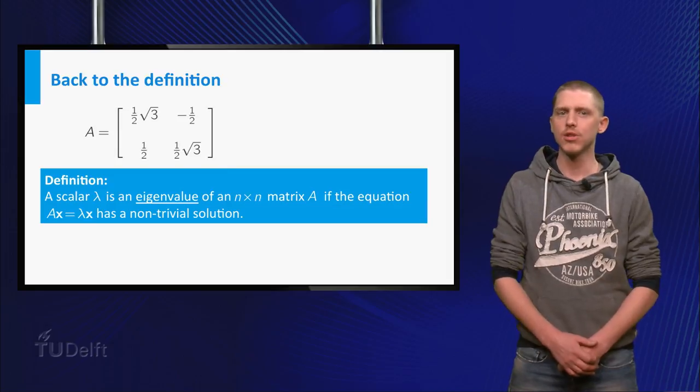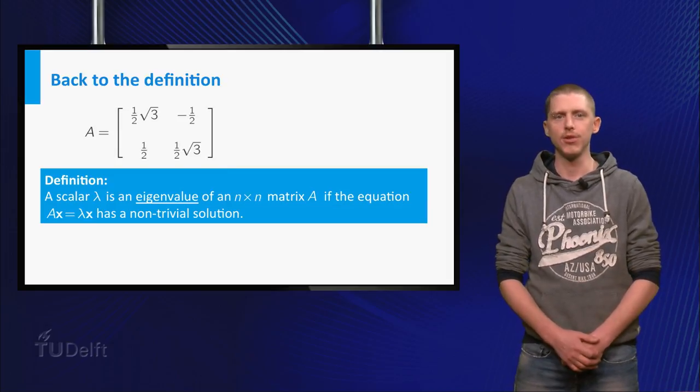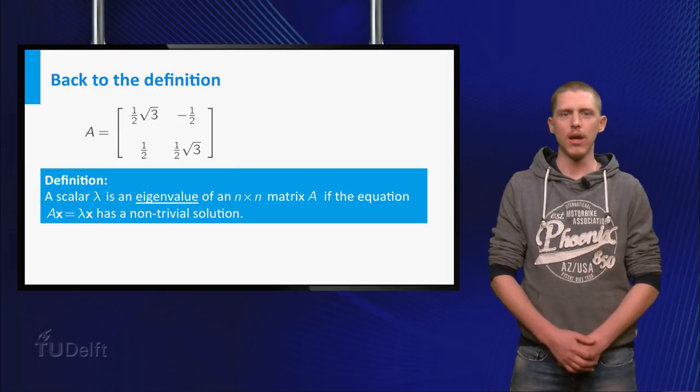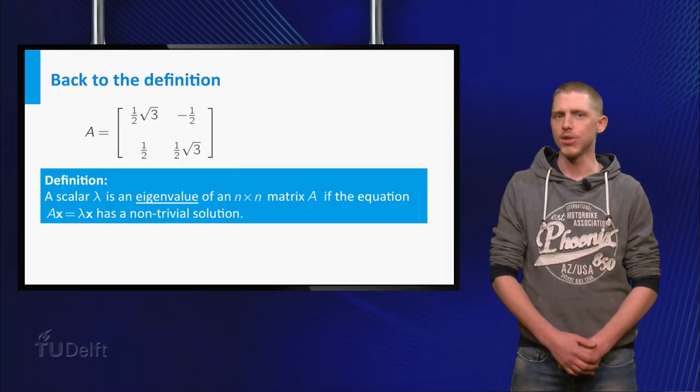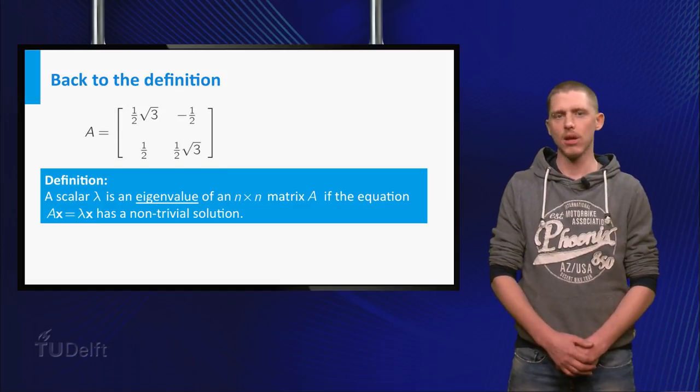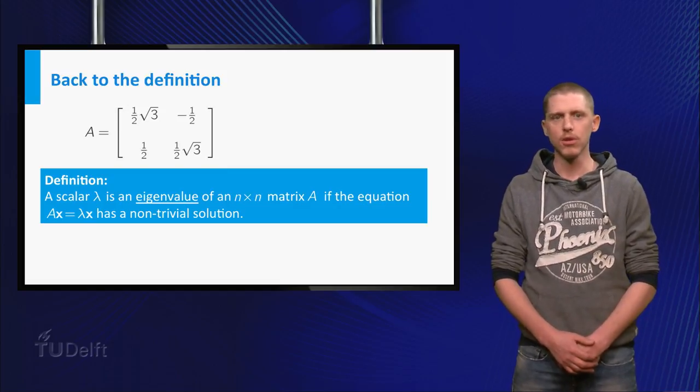Now let us go back to what an eigenvalue of a matrix A should be. An eigenvalue of an n by n matrix A is a scalar lambda, such that the equation A times x equals lambda times x has a non-trivial solution.